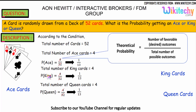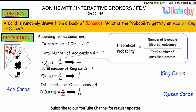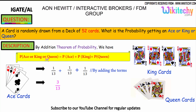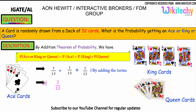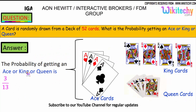The probability of ace is 1/13. The probability of a king is 1/13. And the probability of a queen is 1/13. The probability of getting an ace or a king or a queen equals 1/13 plus 1/13 plus 1/13 — we got the answer as 3/13. So the final answer is: the probability of getting an ace or a king or a queen is 3/13.